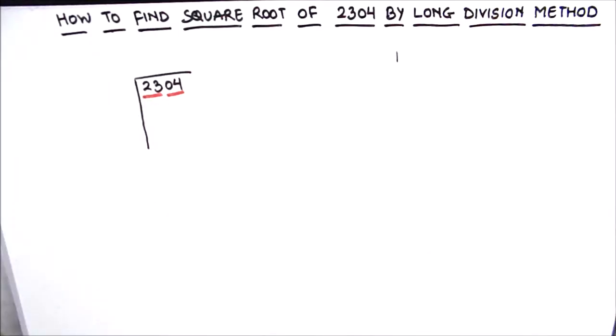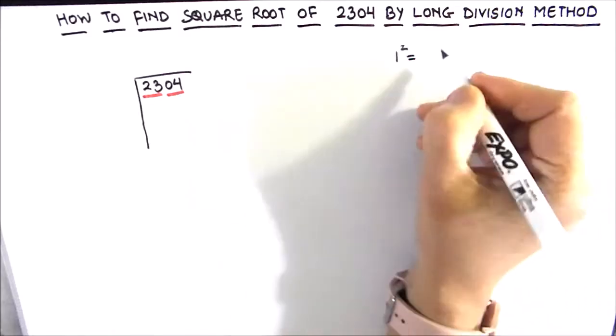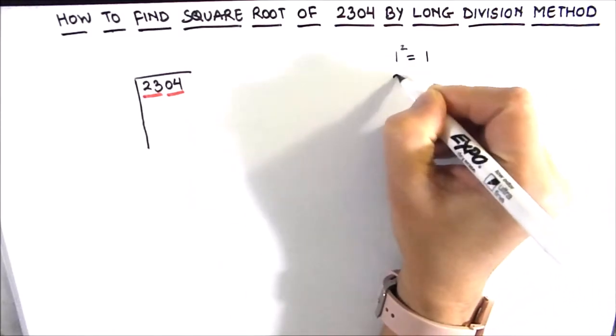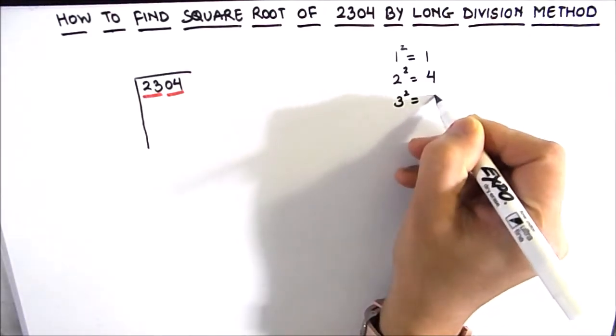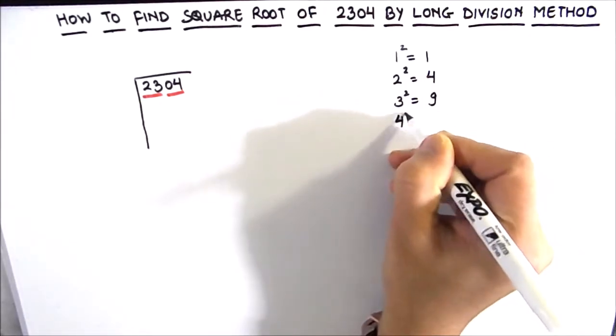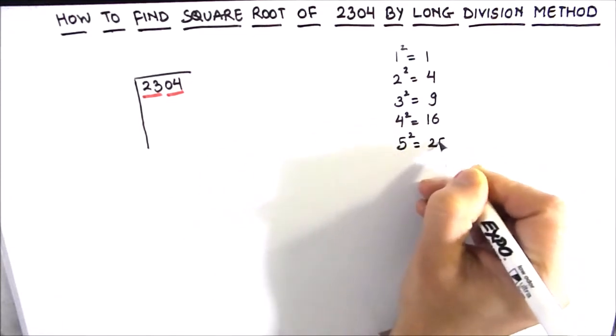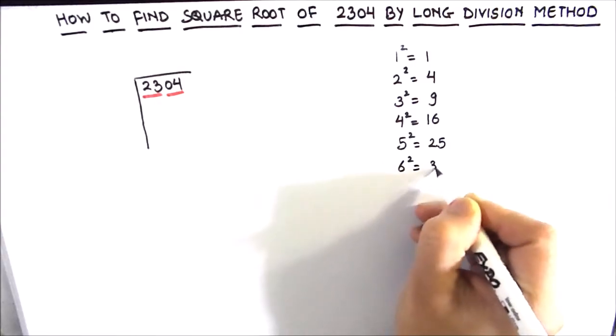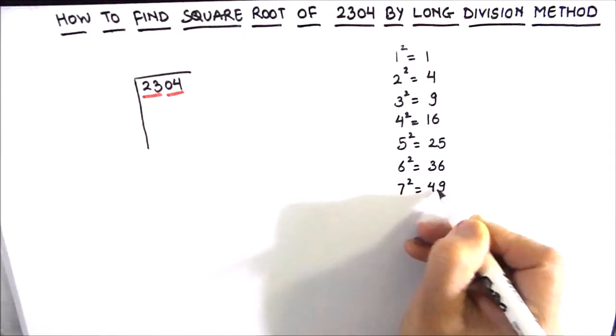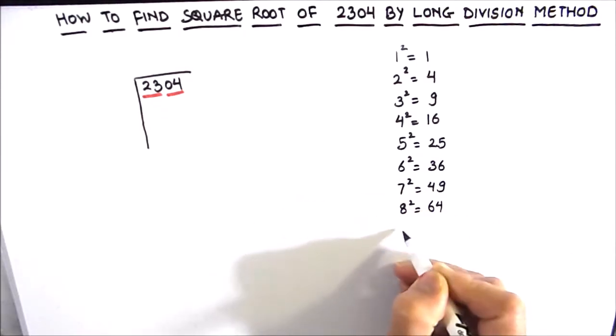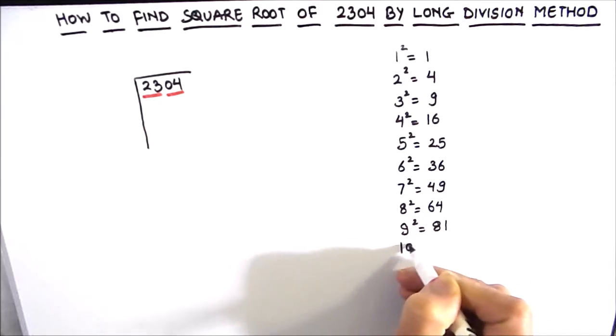For our convenience I am going to write the squares of all the numbers from 1 to 10 here on the right hand side of the board. 1 squared is 1, 2 squared is 4, 3 squared is 9, 4 squared is 16, 5 squared is 25, 6 squared is 36, 7 squared is 49, 8 squared is 64, 9 squared is 81 and 10 squared is 100.